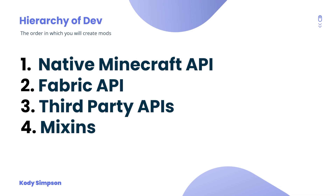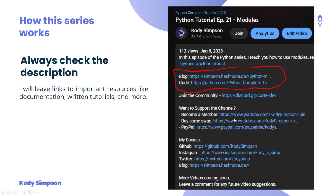If there's a feature that's not in the Minecraft API, not in the Fabric API, and no one has created a third-party API for it, then use mixins. Mixins allow developers to modify the behavior of existing game classes without creating a new class or overriding methods. This is the least recommended approach because things change over time and you'd have to update your code. So: Minecraft API first, Fabric API second, third-party APIs third, and mixins as a last resort.